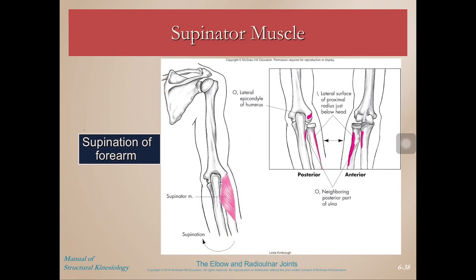The supinator arises off the lateral epicondyle as well as the lateral surface of the radius, and we see it wrapping around there — it supinates the forearm.